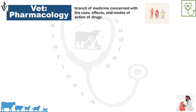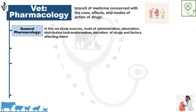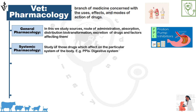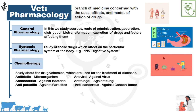Veterinary pharmacology is a science in which we study about drugs in all aspects — their uses, effects, and mode of action. General pharmacology covers the sources, routes of administration, absorption, distribution, biotransformation, excretion of drugs, and the factors affecting them. Systemic pharmacology covers drugs that affect particular systems of the animal body — for example, proton pump inhibitors, which affect the digestive system, and anesthetics, which affect the central nervous system.